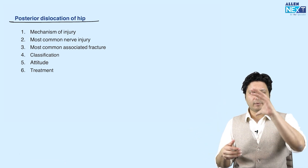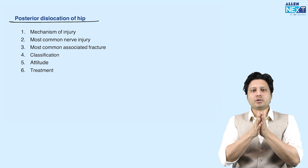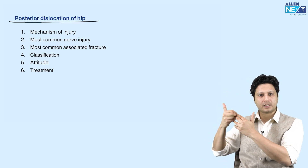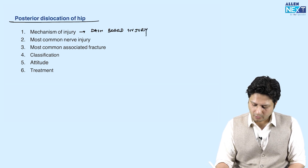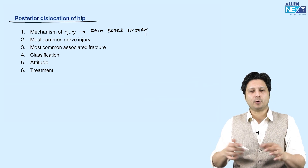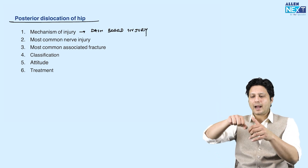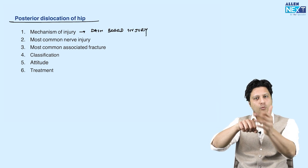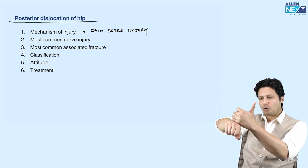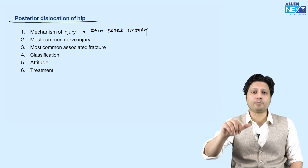In posterior dislocation, when the head of the femur gets dislocated posteriorly out of the acetabulum, there must be a force thrusting it posteriorly. The mechanism of injury is the dashboard injury. Imagine you are riding in the front seat of a car and there is a sudden application of brakes — the knee strikes the dashboard. That equal and opposite force is transmitted up to the hip joint, thrusting it to move posteriorly.